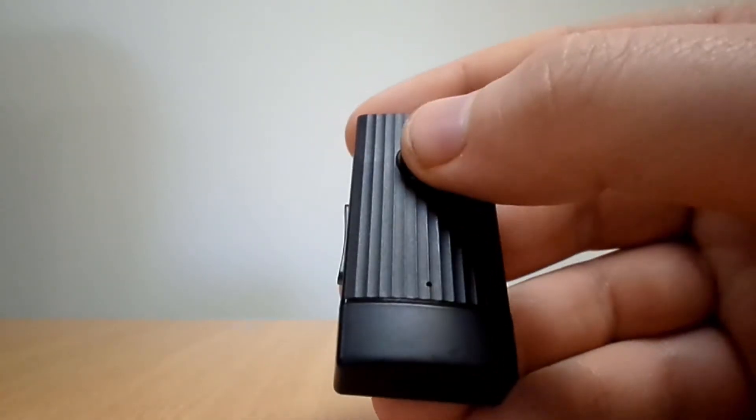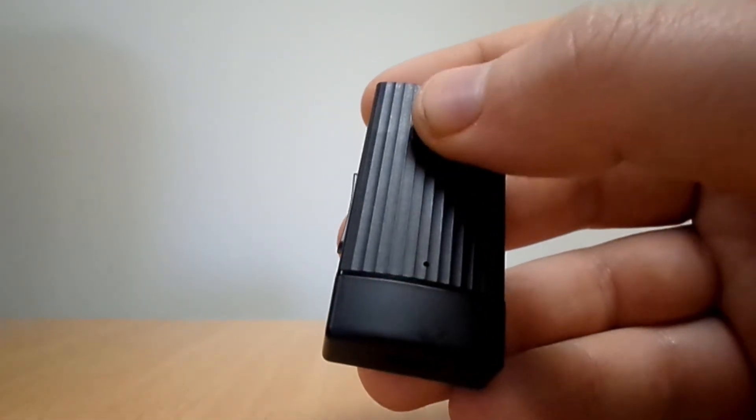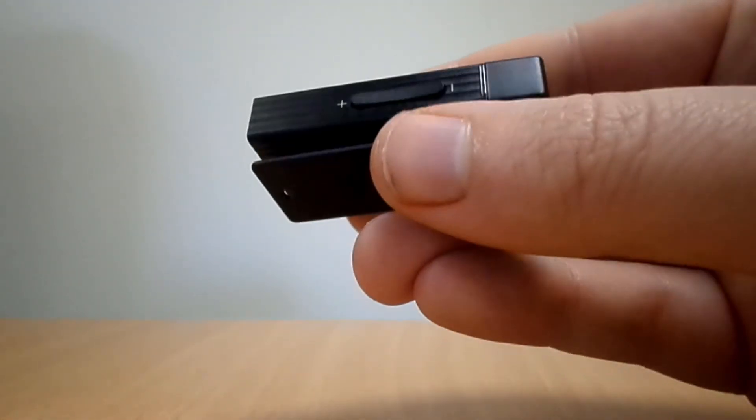Tapping the front button controls play and pause functions, and tapping the side controls adjusts volume, whereas holding them controls track skipping.